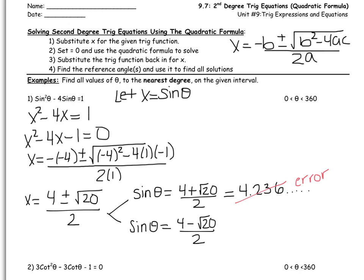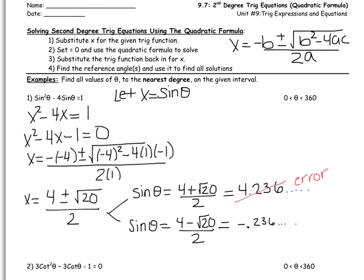Let's take care of the other piece: 4 minus radical 20. Plug just the top into the calculator — you get about negative 4.72. Divide by 2, and you get about negative 0.236. Don't clear this out of your calculator because we want as many decimal places as possible for appropriate rounding. This tells me that sine of theta is negative, so which quadrants are we in? We need to draw A, S, T, C. Sine is negative in quadrants 3 and 4.